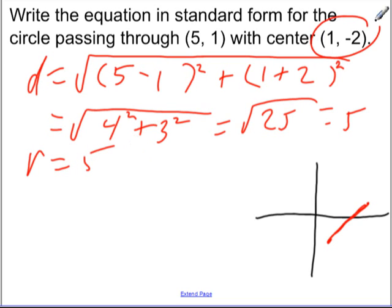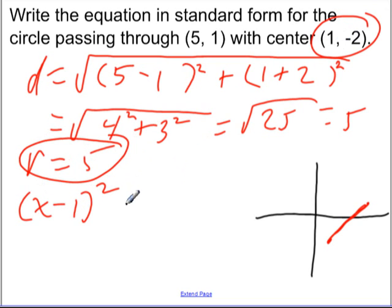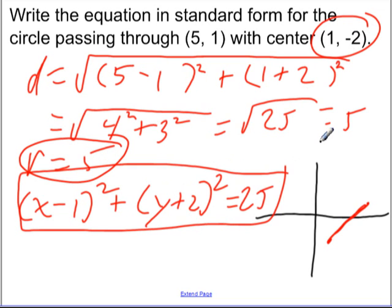And so now we've got our center, we've got our radius, so we've got our equation. (x - 1) squared because our h is positive 1. (y + 2) squared because our k is negative 2. And radius squared is 25. And there's our equation.